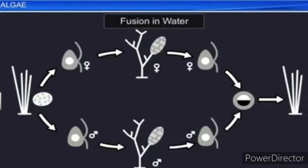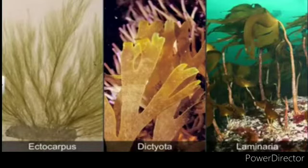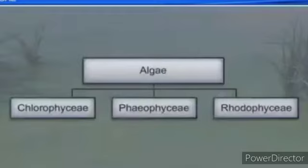The common forms of Phaeophyceae are Ectocarpus, Dictyota, Laminaria, Sargassum, and Fucus.